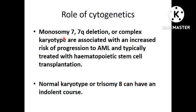Childhood MDS has more acquired cytogenetic abnormalities and RAS pathway mutations. Monosomy 7, 7Q deletion, and complex karyotype are associated with increased propensity to progression to AML and should be treated with hematopoietic stem cell transplantation. Whereas normal karyotype and trisomy 8 are associated with an indolent course.